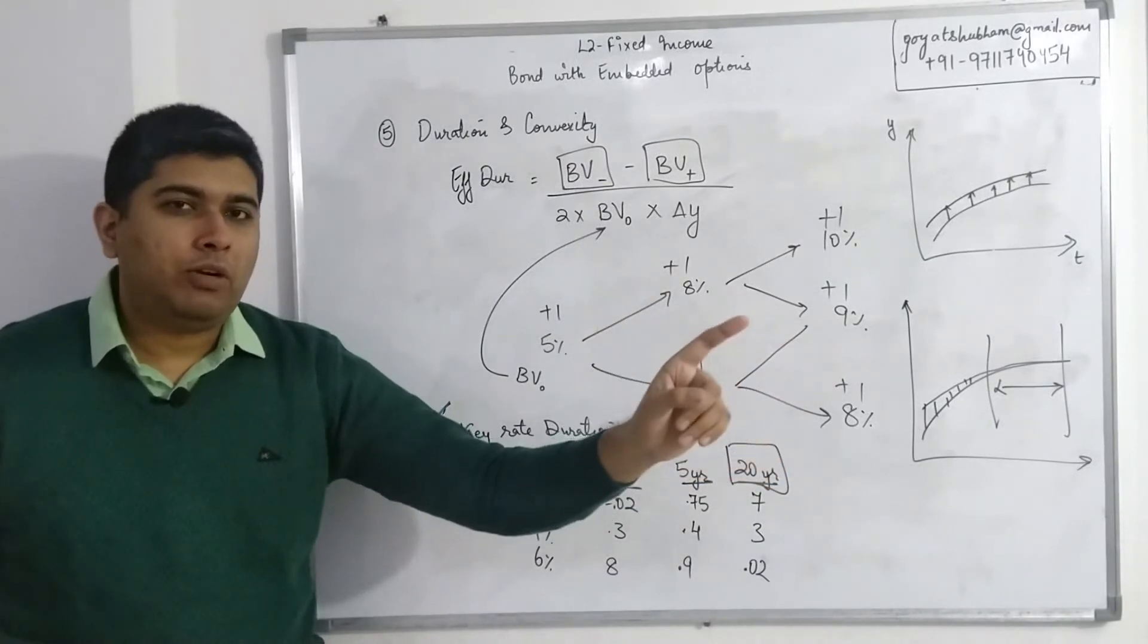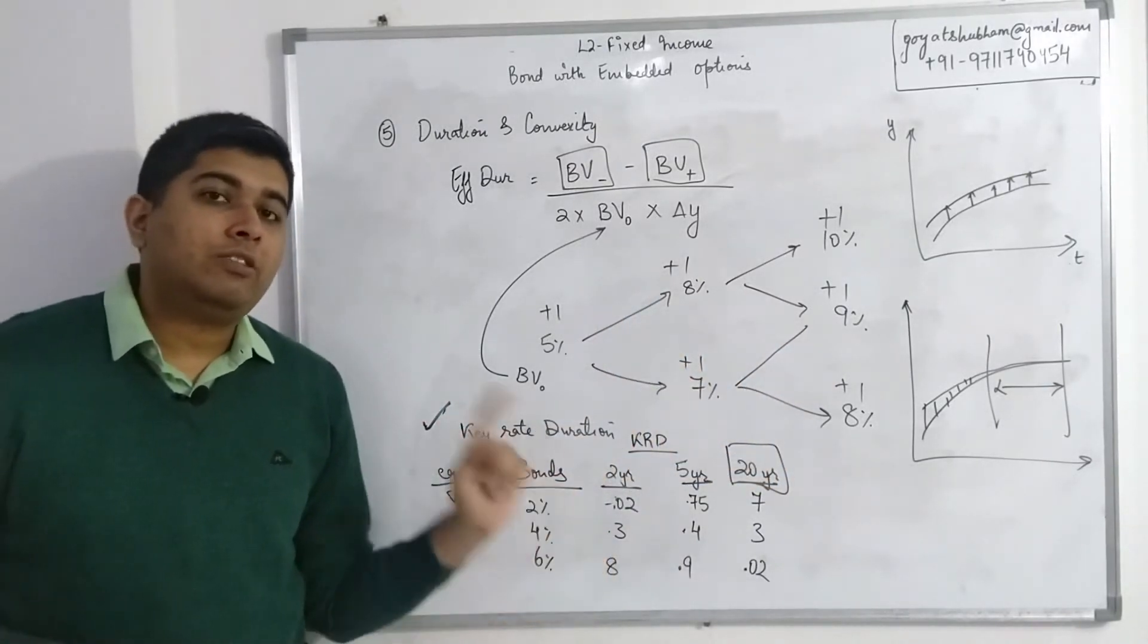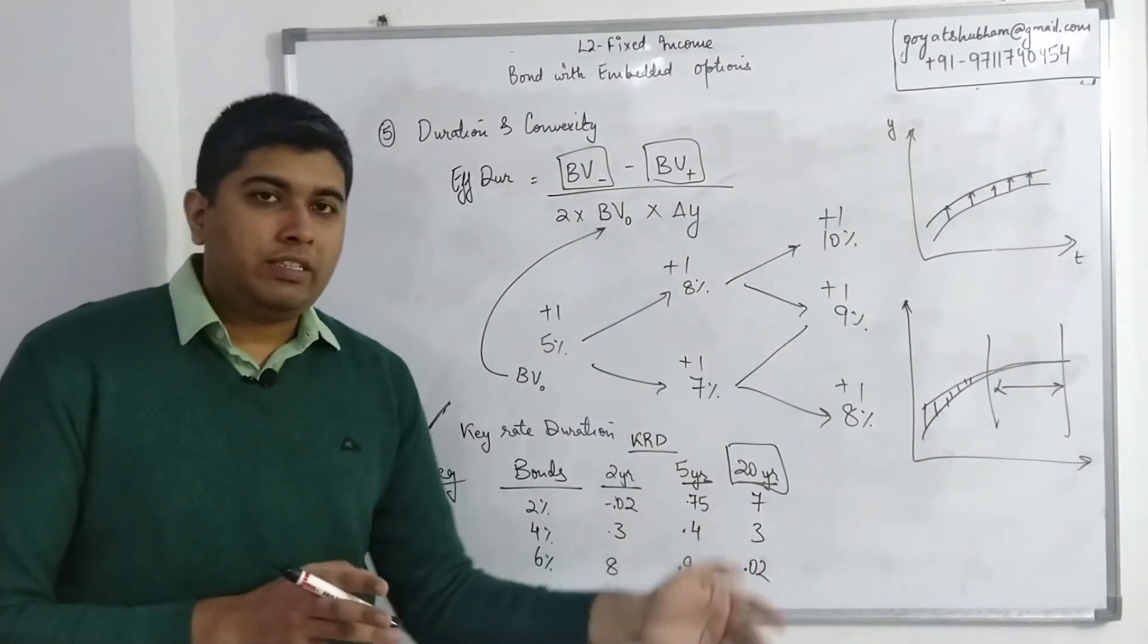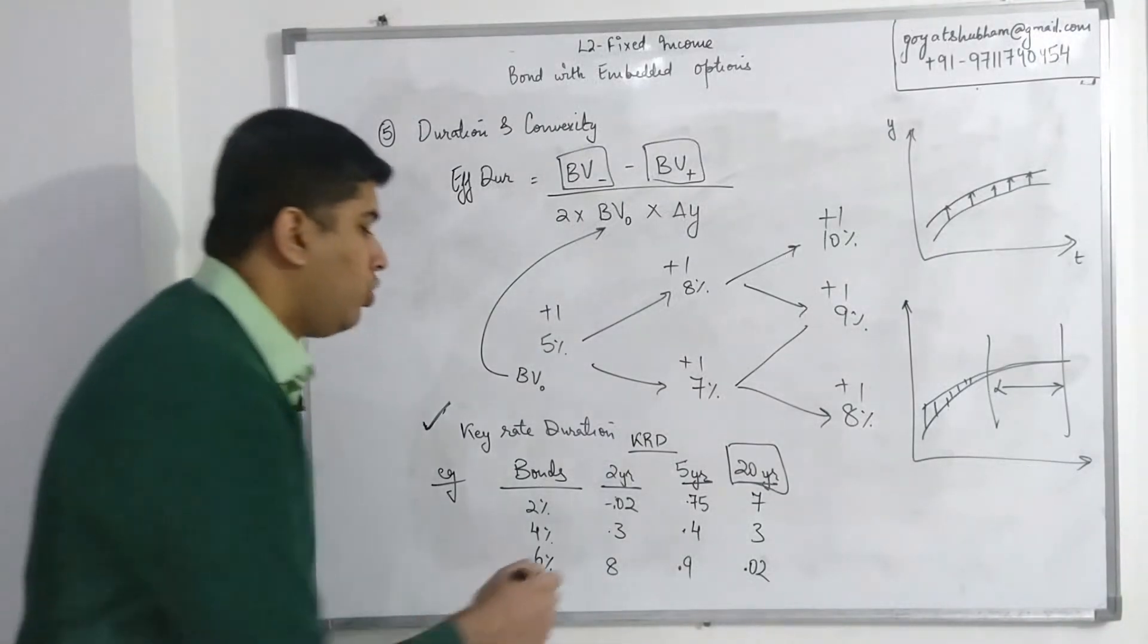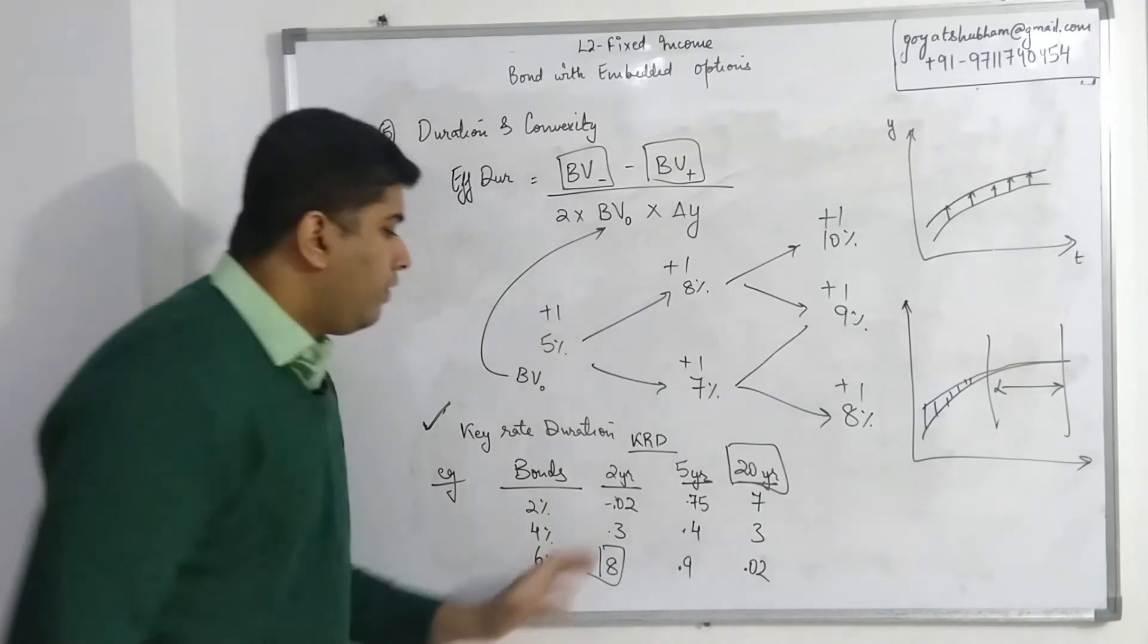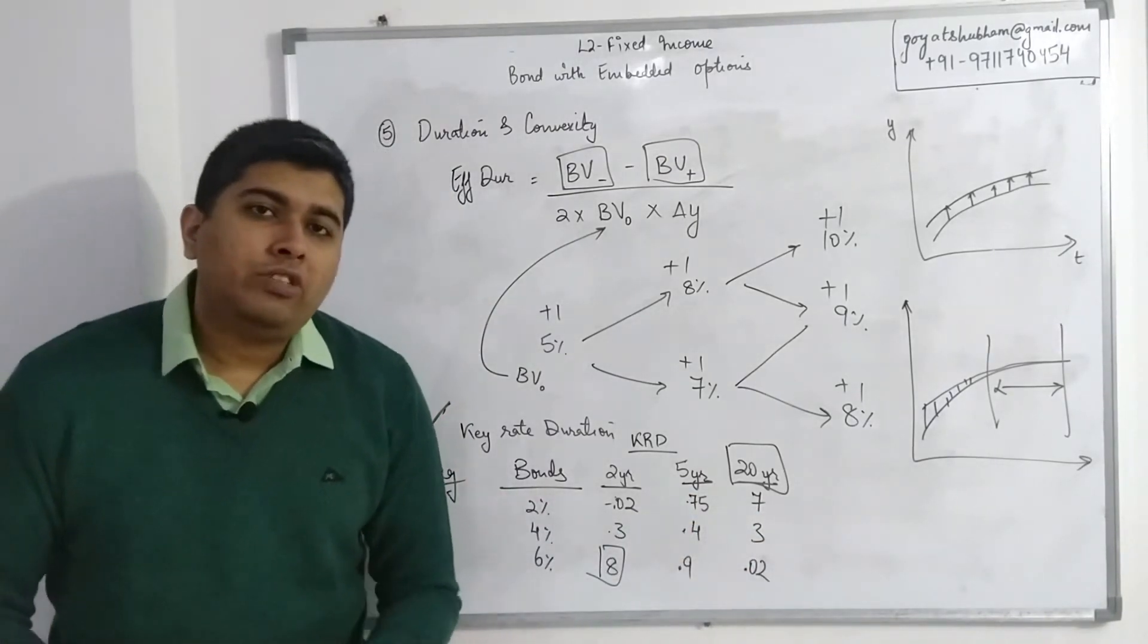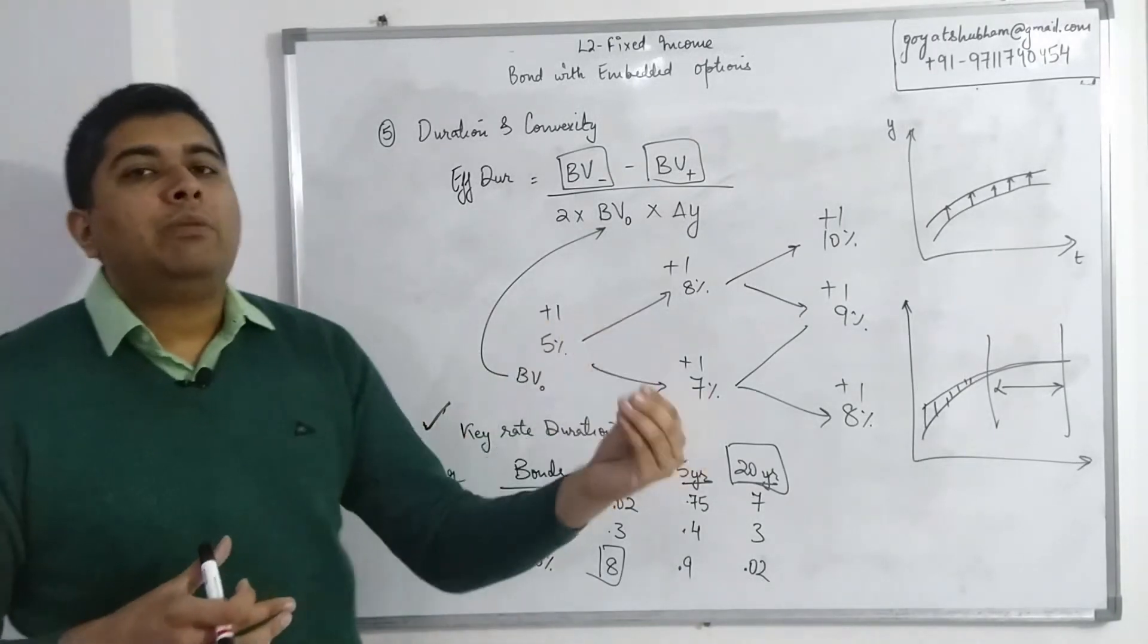This means if the long-term interest rates change even by a small amount, that is drastically going to affect my bond because my bond is more volatile in context of long-term interest rates. Conversely, for 6% coupon bonds, the bigger volatility comes in the short term. So these values could be provided to you and you could get some theoretical questions where you just have to interpret as to which bond is more volatile at a given maturity.